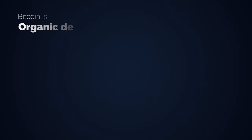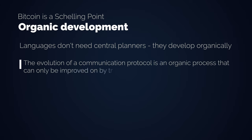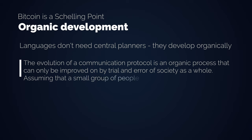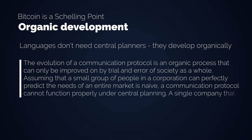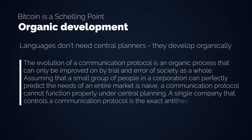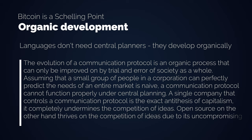Bitcoin is winning due to its open source and permissionless nature. A language is supposed to organically develop and spread without a central planner deciding how it works. The evolution of a communication protocol is an organic process that can only be improved through the trial and error of society as a whole. Assuming a small group of people in a corporation can perfectly predict the needs of an entire market is naive. A single company controlling a communication protocol is the exact antithesis of capitalism — it completely undermines the competition of ideas. Open source, on the other hand, thrives on the competition of ideas due to its uncompromising, meritocratic nature.